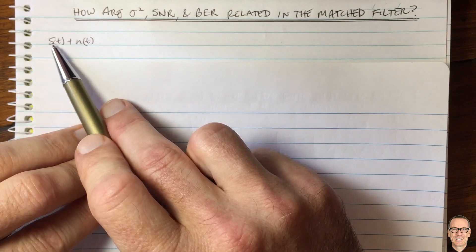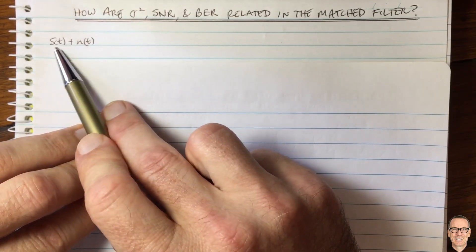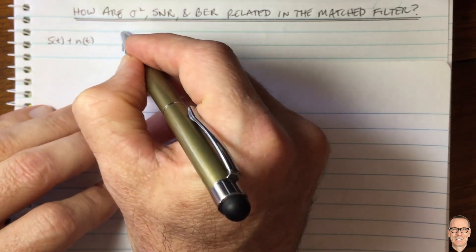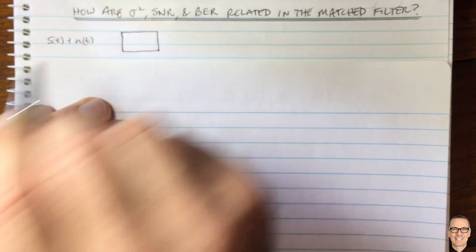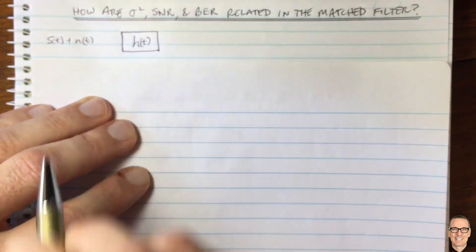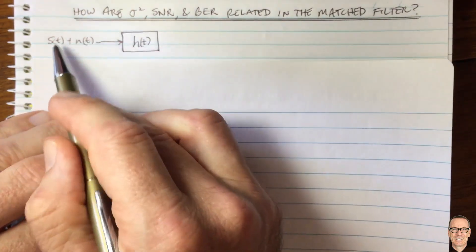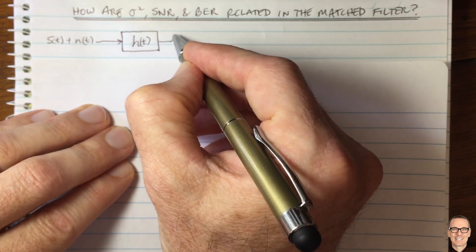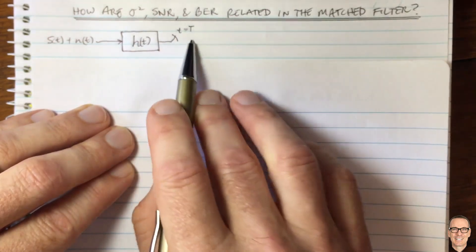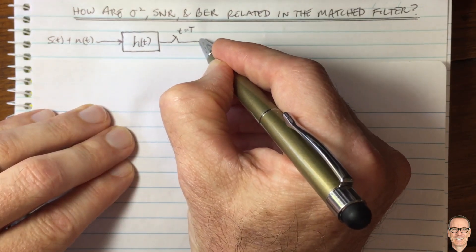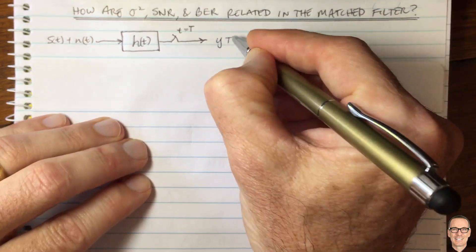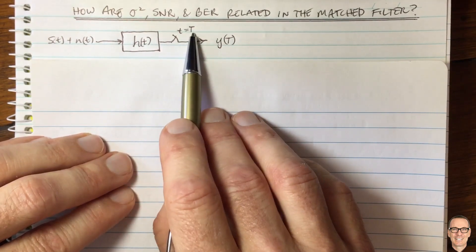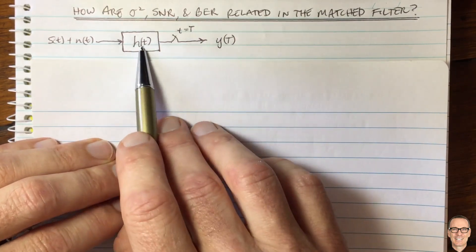Let's go back to basics. We have a signal plus noise in continuous time — a signal waveform with noise coming from the receiver going into a filter. In digital communications we put this into a filter to make a sample, adding up the energy from the signal plus unavoidable noise. We sample the output of that filter at the digital sampling time capital T and pass it to a detector. Y at capital T is the output of this receiver filter sampled at time T.